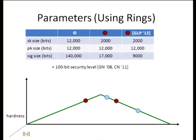For concrete parameters: basing on SIS at about 100-bit security, the secret key is about 12,000 bits, the public key is about the same, and the signature size is about 140,000 bits using rings. Switching to LWE, the secret key goes down to about 2,000 bits, the public key stays the same, and the signature decreases to about 17,000 bits.